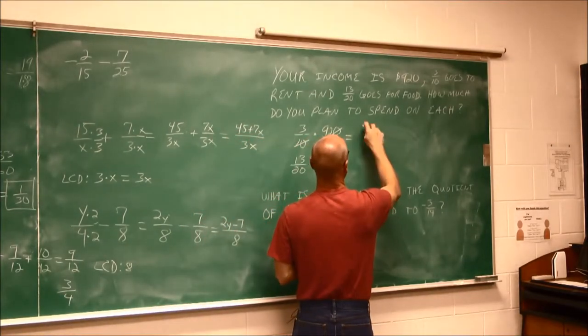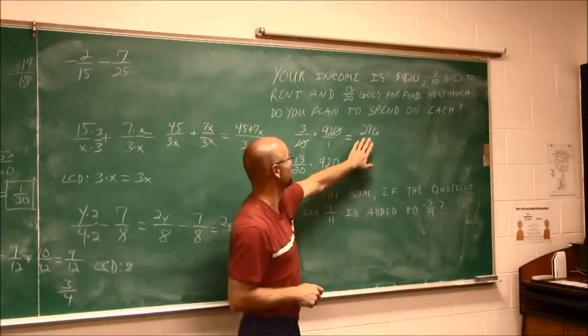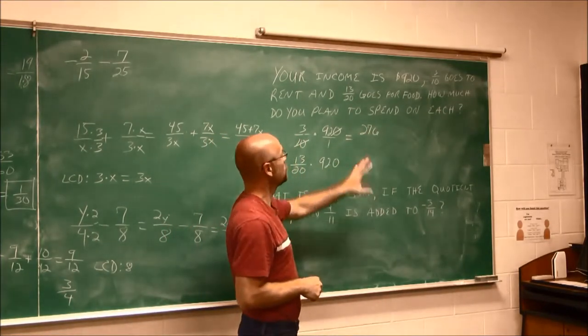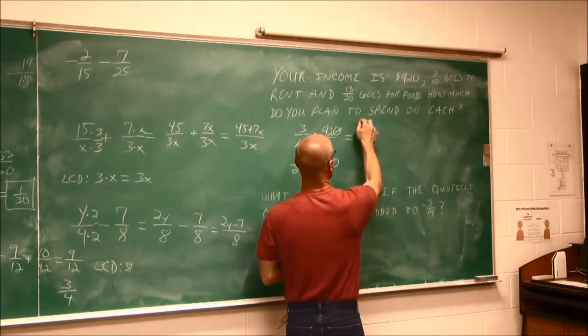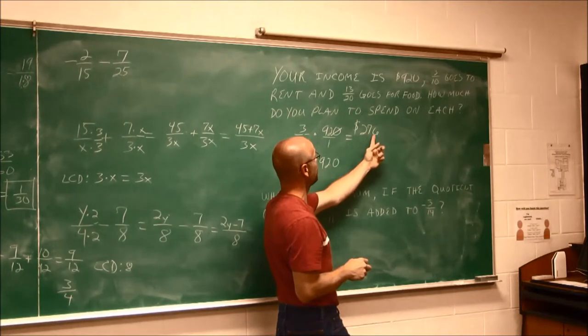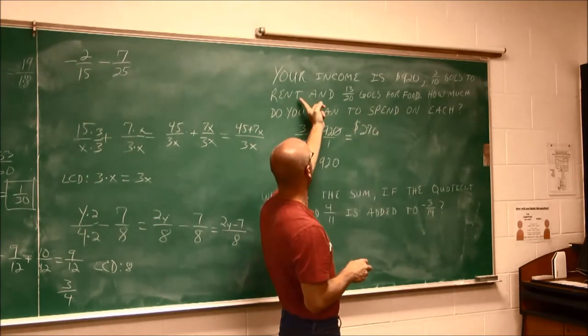Oh actually, this is 276. We all make math errors. Don't let it frustrate you. 276. 276 what? Well, income is measured in dollars, so that's our units. I'm going to spend $276. That 3 tenths was for rent.